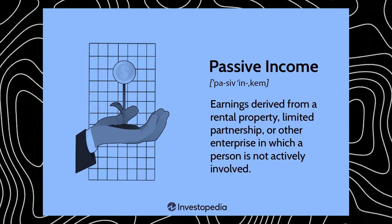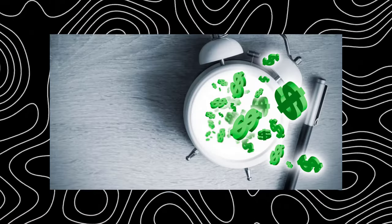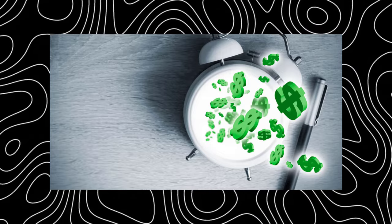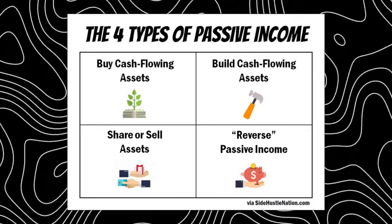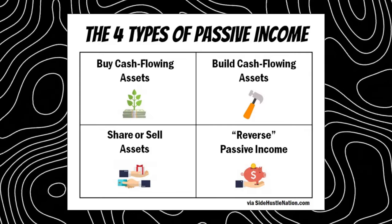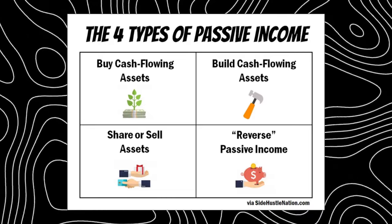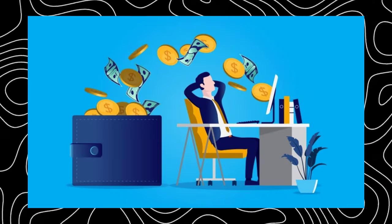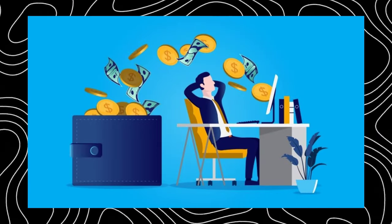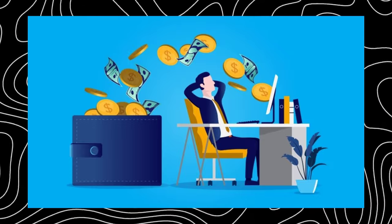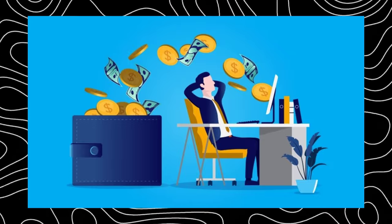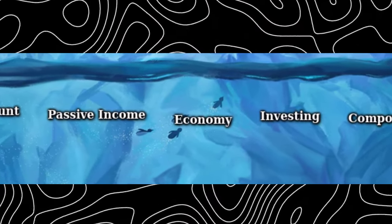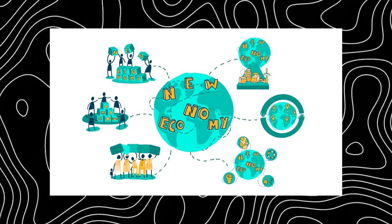Passive income is a dream for most people — essentially earning money while doing little to nothing, even in your sleep or on vacation. It comes from sources like rental income, stock dividends, or a side hustle running by itself. Don't be fooled by the word 'passive' though — it often requires upfront work and investment. A high-yield savings account is one source of passive income, paying interest monthly, so you're effectively earning income on your money.